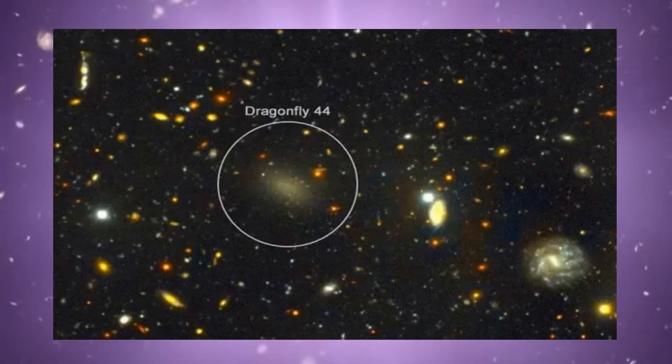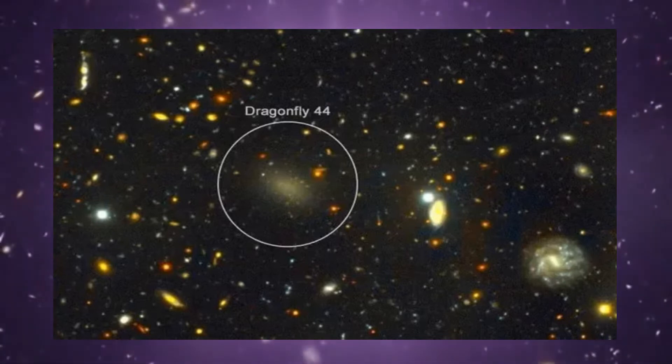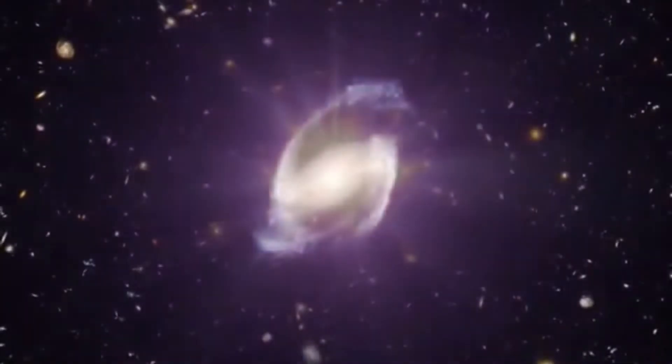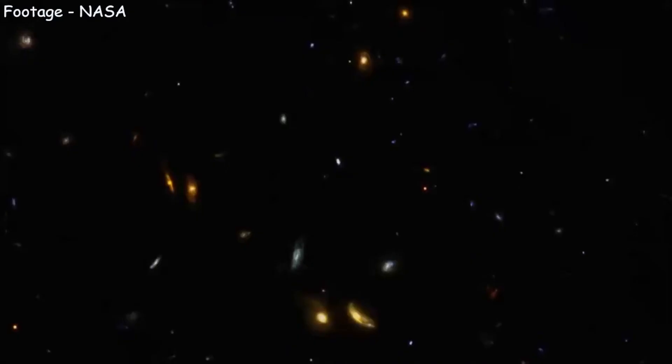Now, the Dragonfly 44 galaxy is made up of 0.01% of normal matter and all the other matter in this galaxy is made up of 99.99% of dark matter. That's what makes it the creepiest galaxy and the most mysterious as well.